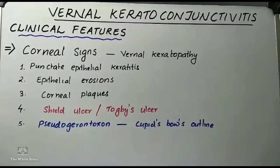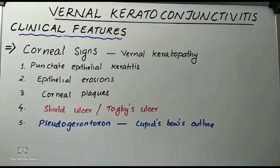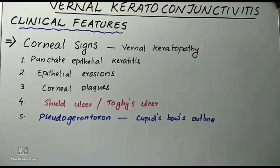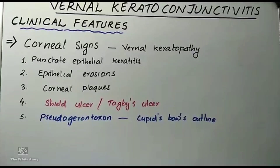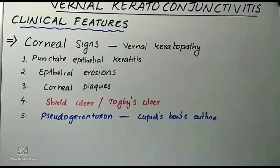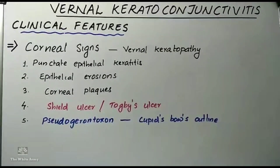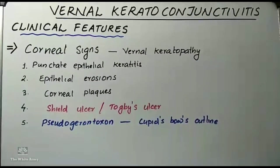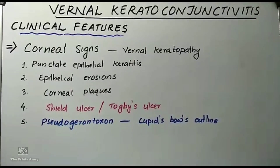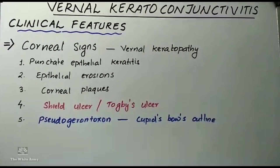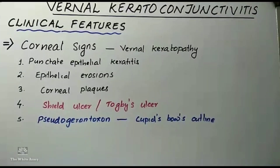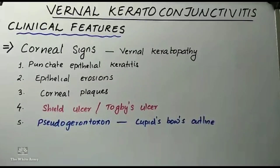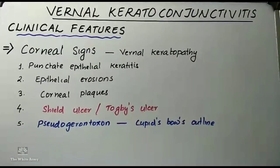Coming to vernal keratopathy, punctate epithelial keratitis involves the upper cornea and is usually associated with the palpebral form. These coalesce and form epithelial erosions. Corneal plaques are formed due to coating of bare areas with mucin and fibrin. Epithelial healing is impaired, leading to the formation of a characteristic shield ulcer or torpid ulcer, presenting as a shallow transverse ulcer in the upper cornea. There is also pseudogerontoxon, which is a paralimbal grey-white band of lipid deposition due to repeated stromal infiltration, resembling arcus senilis, with a classical cupid's bow outline.